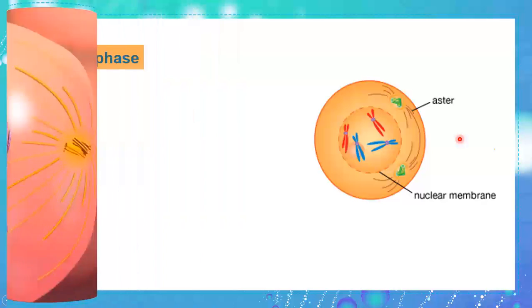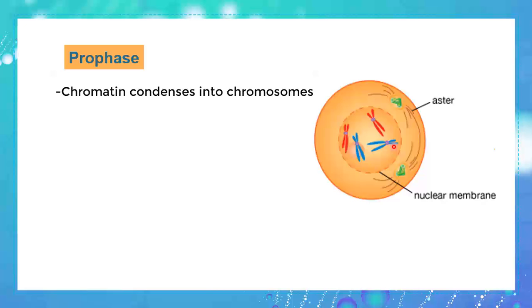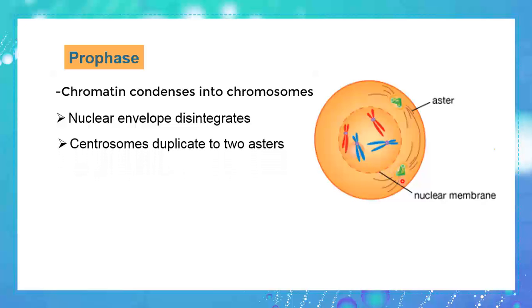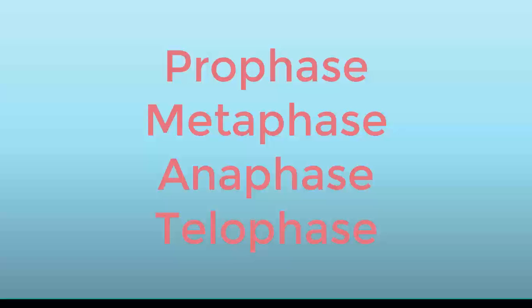Let's see if you described prophase correctly. During prophase, chromatin condenses into chromosomes. The nuclear envelope disintegrates or disappears, as you're seeing here. The centrosomes duplicate into two asters, and finally spindle fibers start to appear between those two asters.